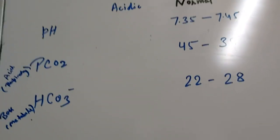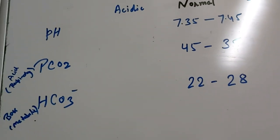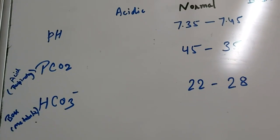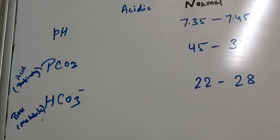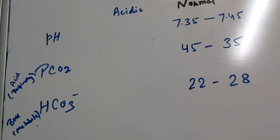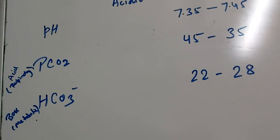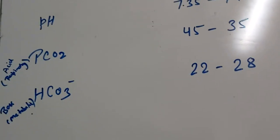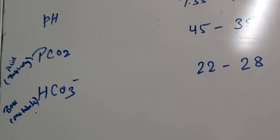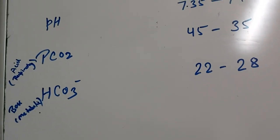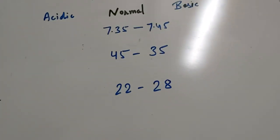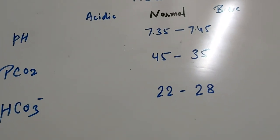When either the bicarbonate or the PCO2 is not able to compensate fully so as to bring the pH to the normal, but it is trying to compensate a little bit, that is some partial compensation is there, then we will say it is partially compensated.